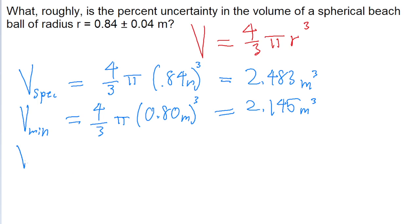Now let's do the same thing for the max, where instead we're adding 0.04 to the radius. Four-thirds pi times the cube of 0.88 meters gives us 2.855 meters cubed.